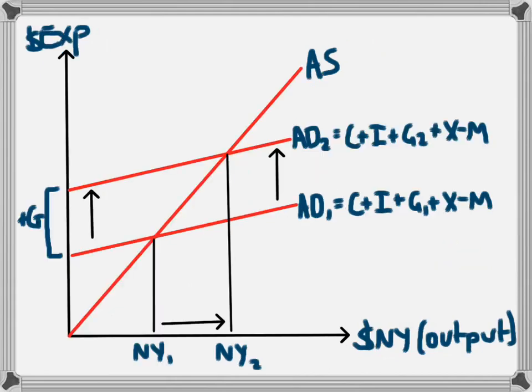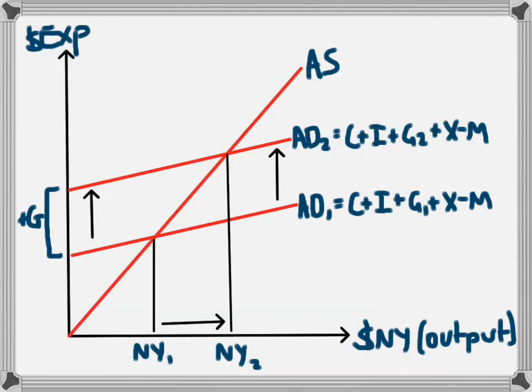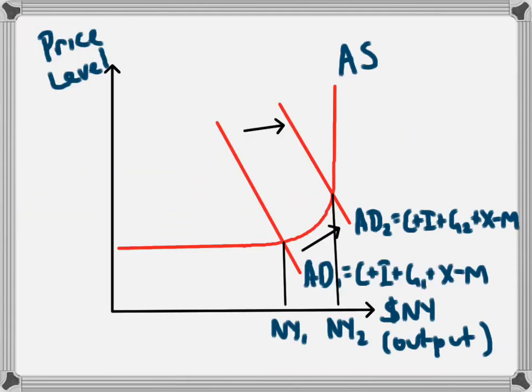This model, as opposed to the previous model, has a different axis. Instead of having expenditure on the vertical axis, this model has price level on the vertical axis. Because of that, in addition to telling us about the change in national income, this model can also indicate that there is a change in the price level.